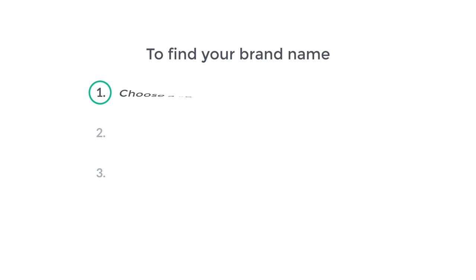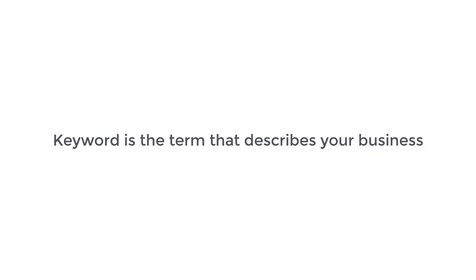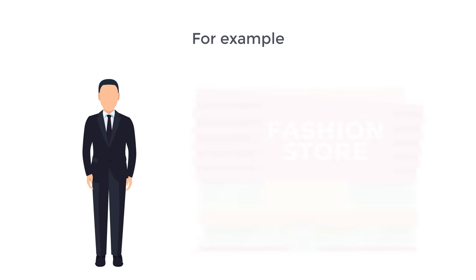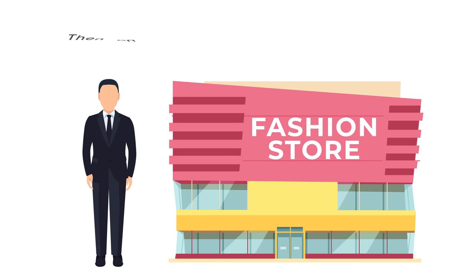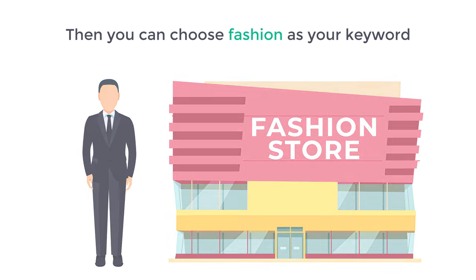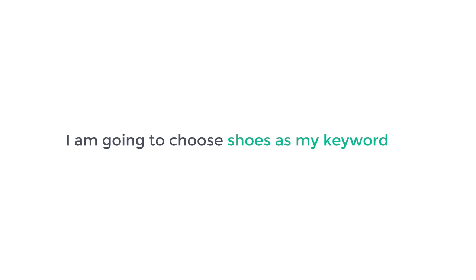The first step is to choose a keyword related to your business. A keyword is the term that describes your business. For example, if your business is related to fashion, then you can choose fashion as your keyword. Since my business is related to shoes, I'm going to choose shoes as my keyword.